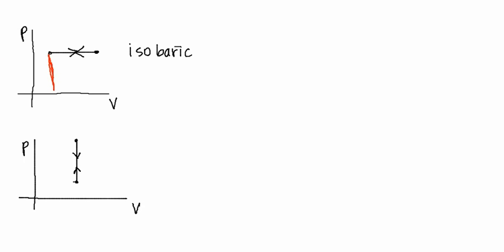For the isobaric process, the work done is the area under the curve from the function all the way down to the volume axis. But in the case where it's an isometric process, there's no area under that curve. If there's no area under that curve, there's no change in volume, then there's no work done.